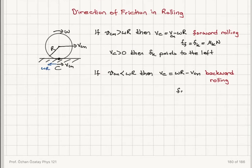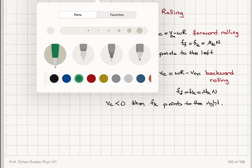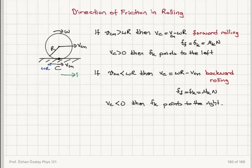In this scenario, the contact velocity is non-zero. Therefore, the force of friction is kinetic friction, which is μ_k times N. Since the contact velocity is negative (to the left), the kinetic friction points to the right. So I would find that there should be a kinetic friction f_k to the right in this case.